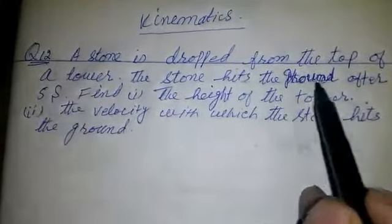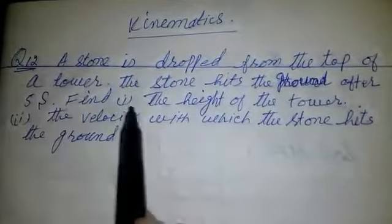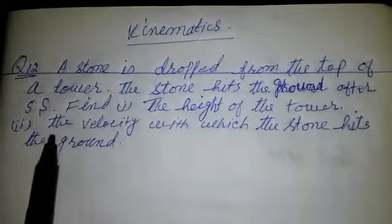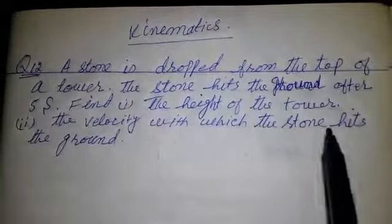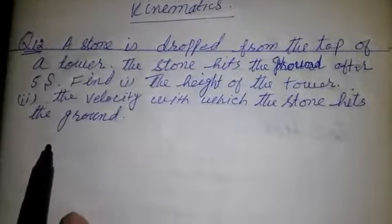The stone hits the ground after 5 seconds. Find the height of the tower and the velocity with which the stone hits the ground. Let's solve it.